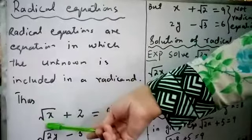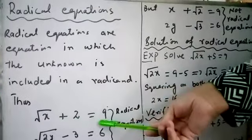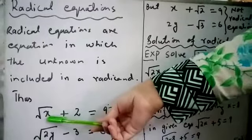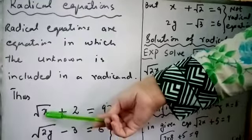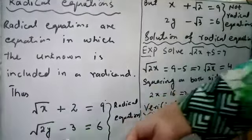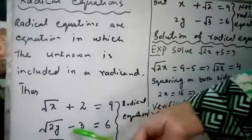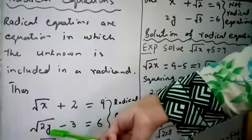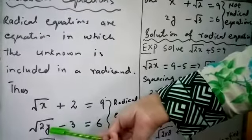Thus, square root x plus 2 equals 9 is a radical equation because here unknown x is in radicand form, that is it is written in the form of square root. Similarly, square root 2y minus 3 equals 6 is also a radical equation. Why? Because here unknown y is in the form of radicand.